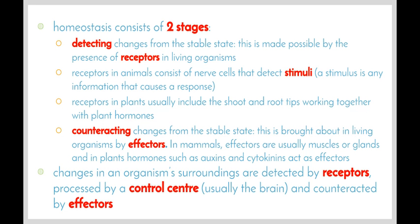Light is detected by photoreceptors in our eye, and temperature is detected by thermoreceptors in our skin. Receptors in plants usually include the shoot and root tips, working together with plant hormones. Once the change has been detected, our bodies and other organisms' bodies need to then counteract these changes to bring it back to the stable state. This is brought about in living organisms by structures called effectors.